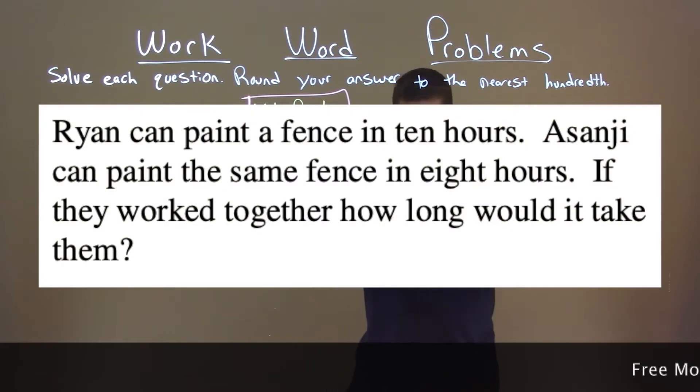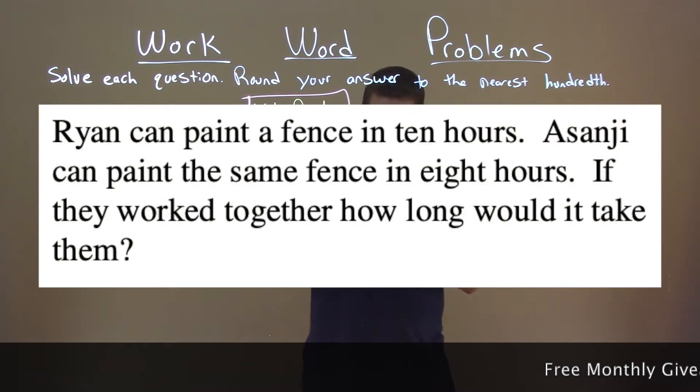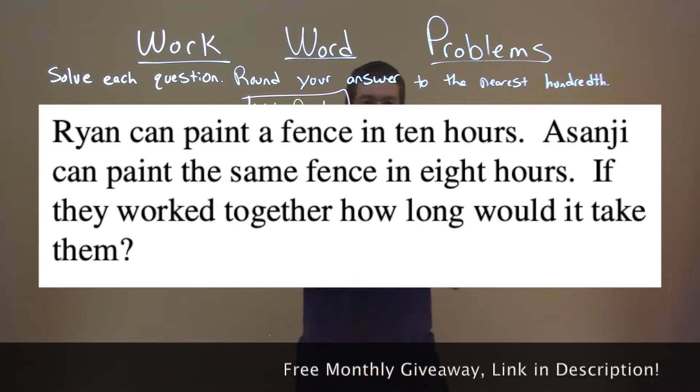Ryan can paint a fence in 10 hours. Asanji can paint the same fence in 8 hours. If they worked together, how long would it take them?